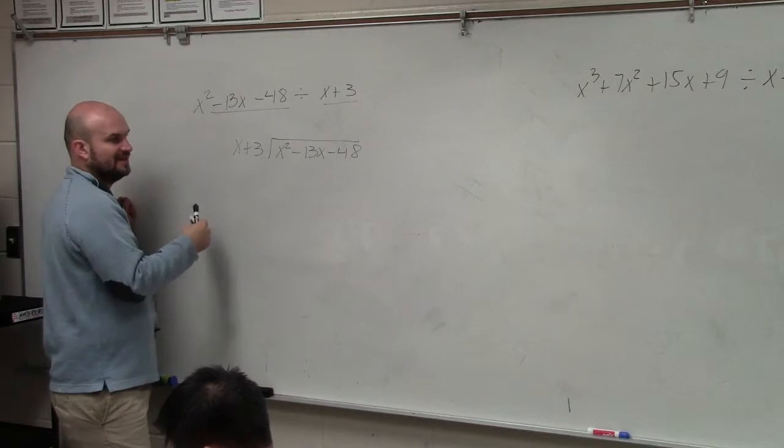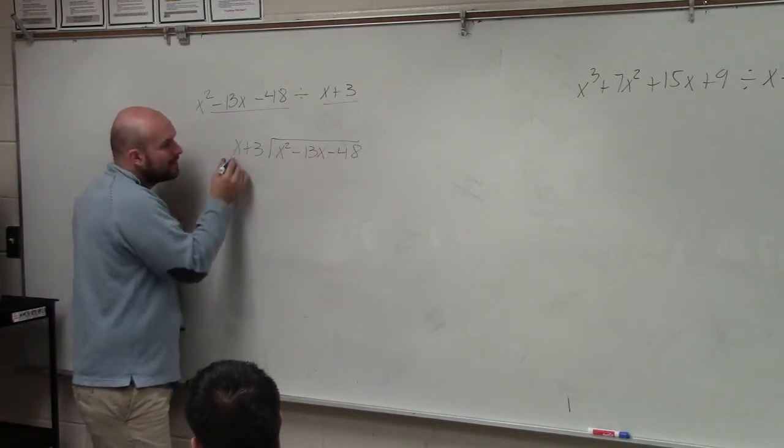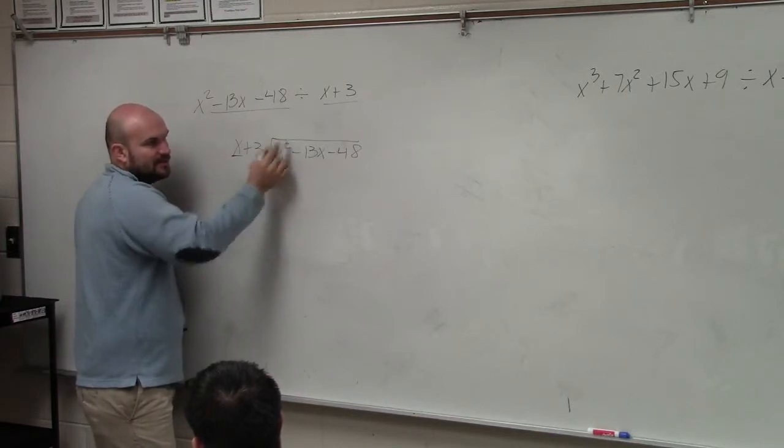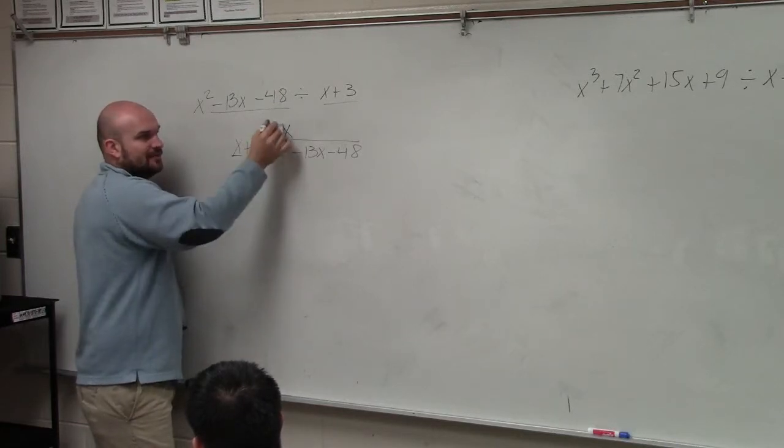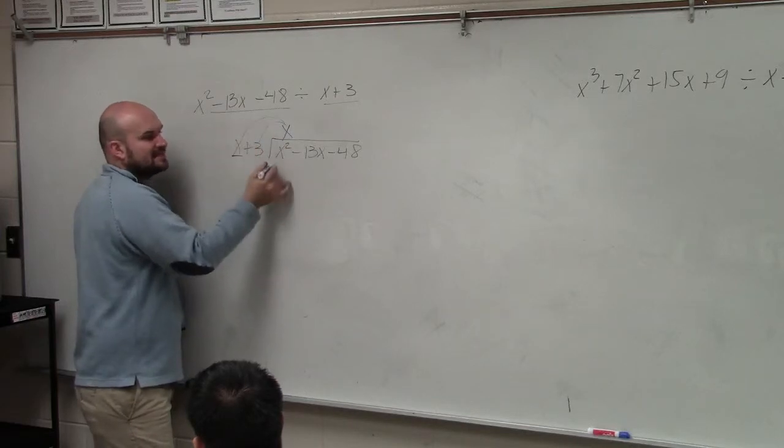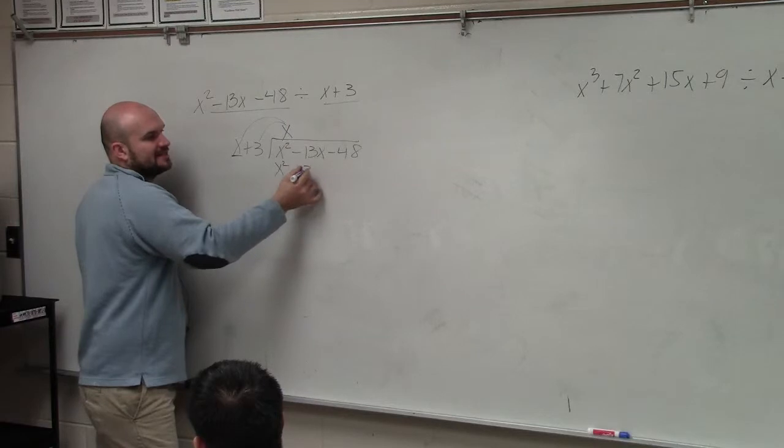When we go ahead and divide these, again, we make sure they're in descending order. We choose our x. x divides into x² x times. Then what we do is, once we have this divided into there, we multiply this by both of our binomials. x times x is x². x times 3 is positive 3x.